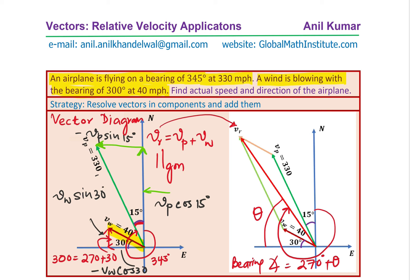We normally write them in terms of unit vectors I and J, where I is a unit vector along the x direction and J is the unit vector along the y direction. So we will resolve these vectors into the two components I and J, add them, and then find the result. So the strategy is: resolve vectors into components and add them up.